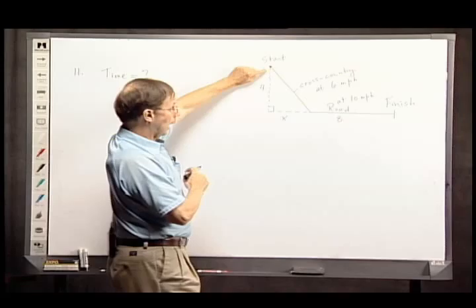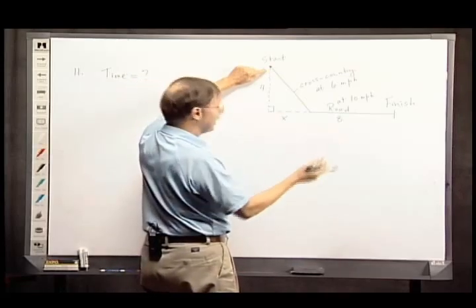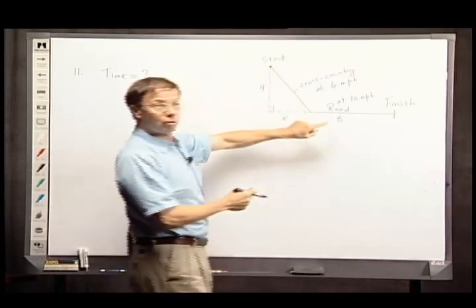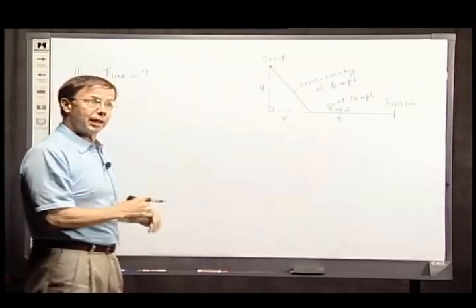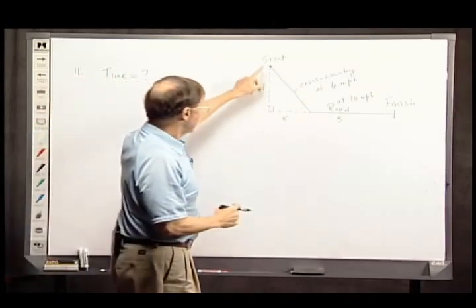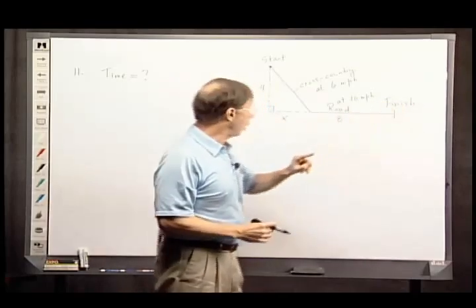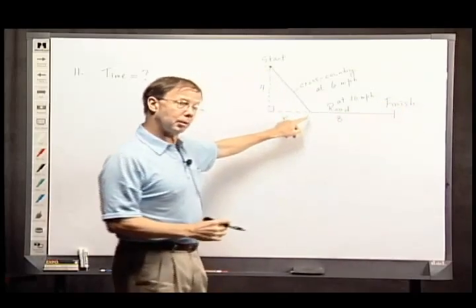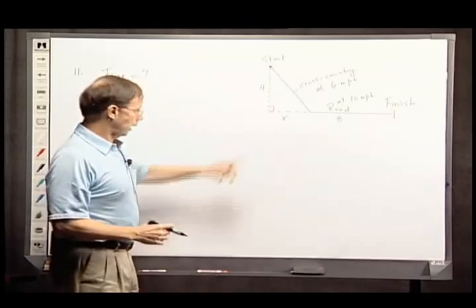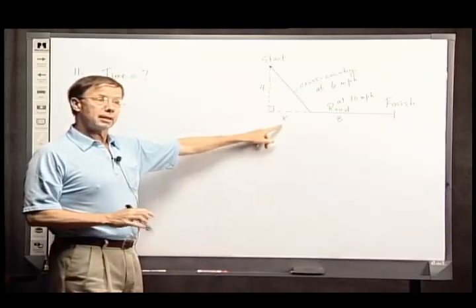This person knows that if I cut across the corner here, maybe I can save some time. So actually, instead of going directly to the road and then following the road, cuts off a certain amount of the corner here, and I've described that as being the little X.